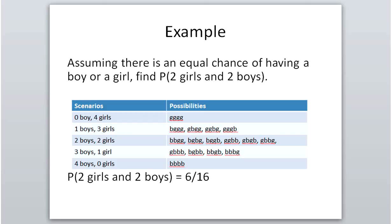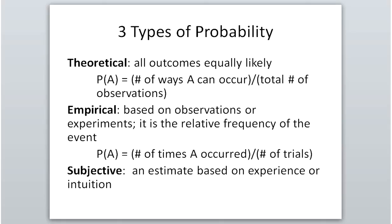So the probability of two boys and two girls is 6/16, which is actually a little less than 0.5 — not what you'd necessarily expect. There are three types of probability. The first is theoretical, where everything is equally likely — like textbook situations such as drawing a card, rolling a die, or flipping a coin. To find the theoretical probability of event A: number of ways A can occur divided by the total number of outcomes.